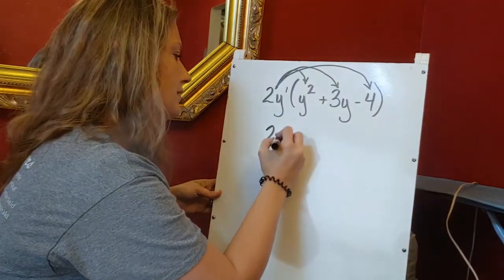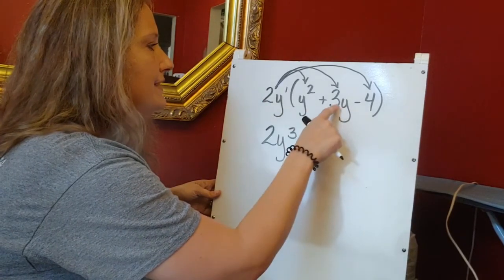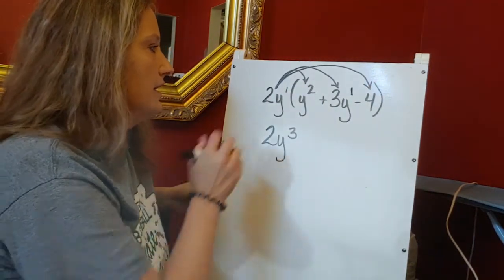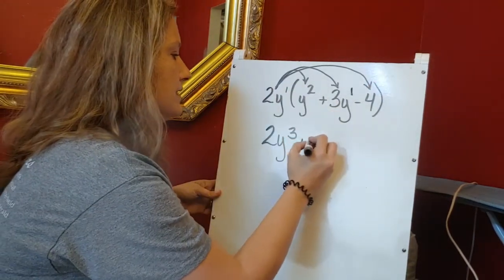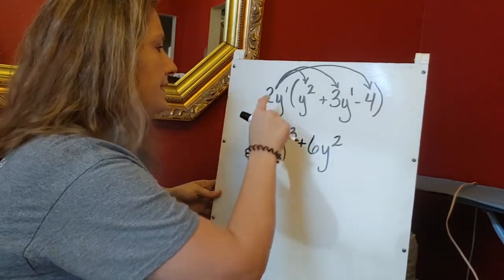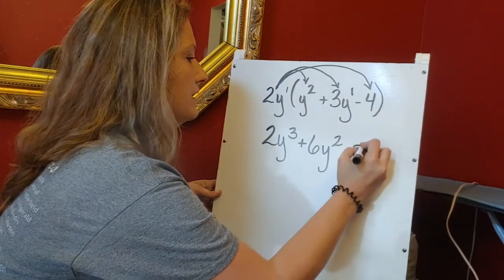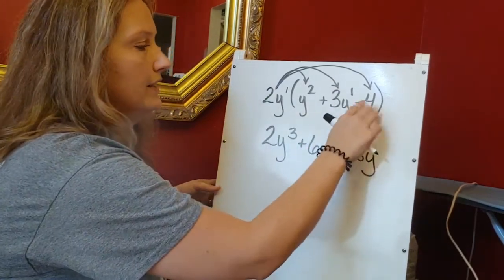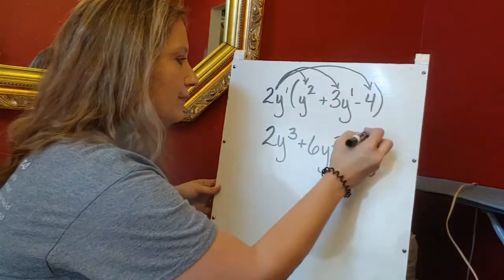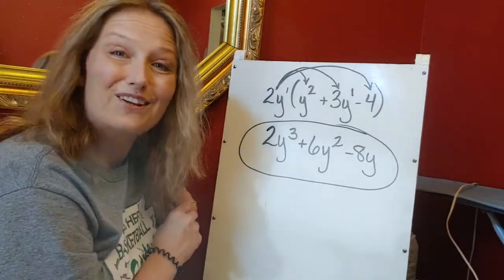Two y times three y: two times three is six, and one plus one gives me y-squared, so that's six y-squared. Then lastly, two y times negative four gives me negative eight y. There's no extra y variable to worry about — I'm just multiplying normally. I don't have anything to combine, so there's my answer.